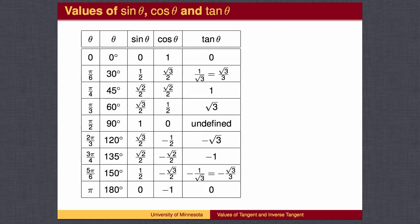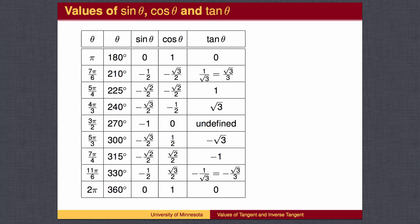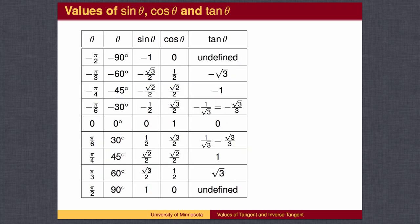Having established the first quadrant values, we can then use the symmetry of the circle to find values in the second quadrant, the third quadrant, and the fourth quadrant. Notice that the values of tangent are positive in the third quadrant, since both the sine and cosine values are negative. The values of tangent are negative in the second and fourth quadrants. We can also go clockwise around the circle to get values for tangent for negative angles.